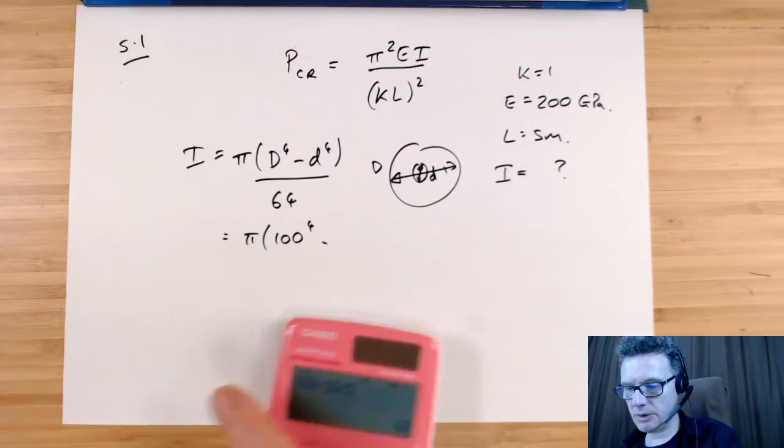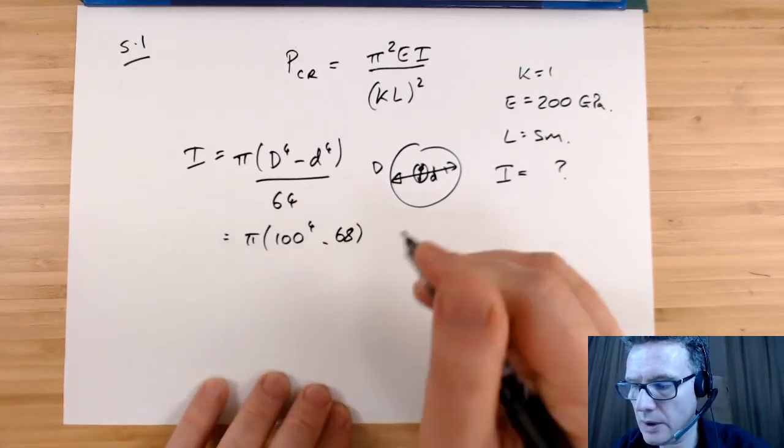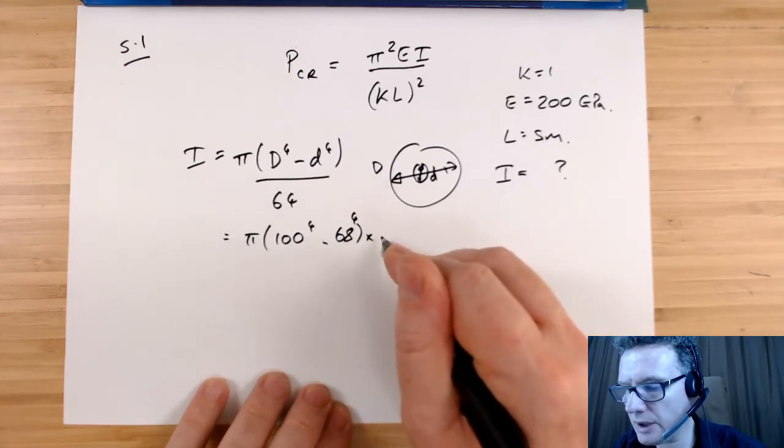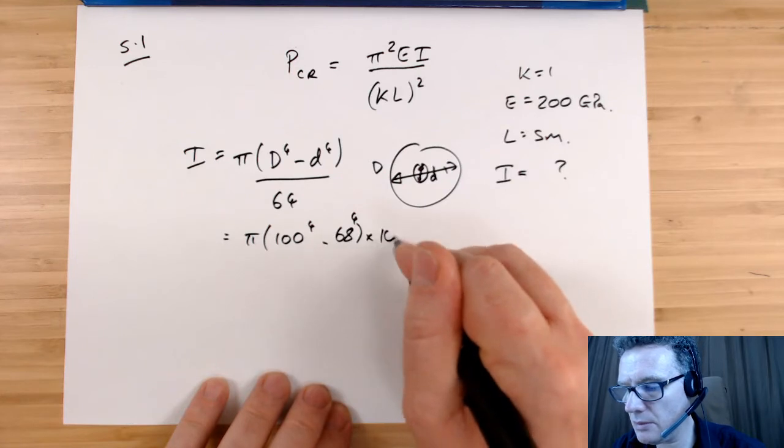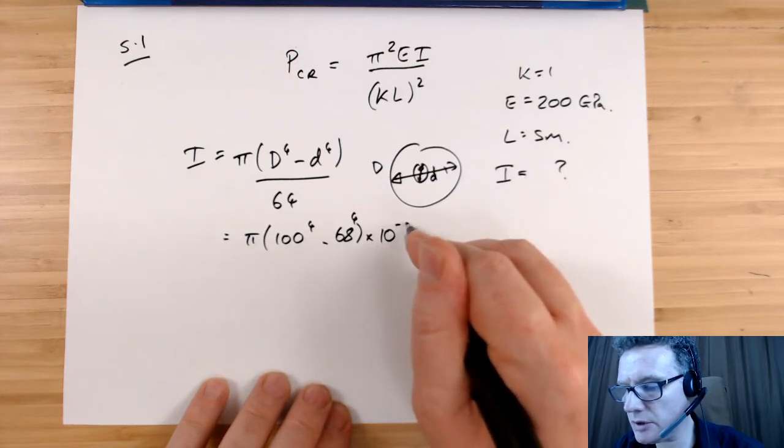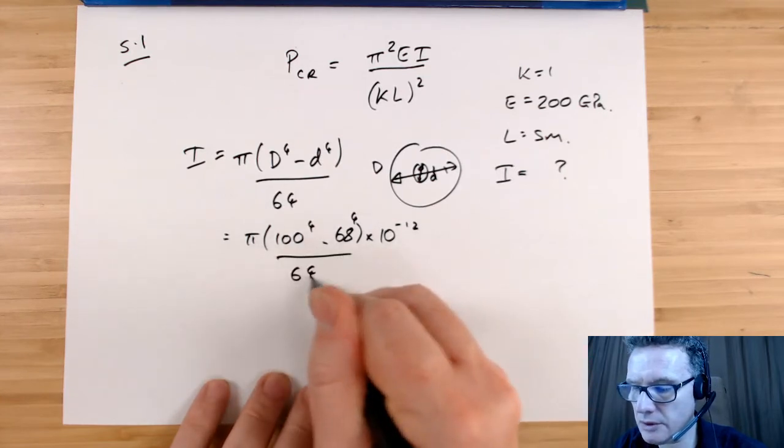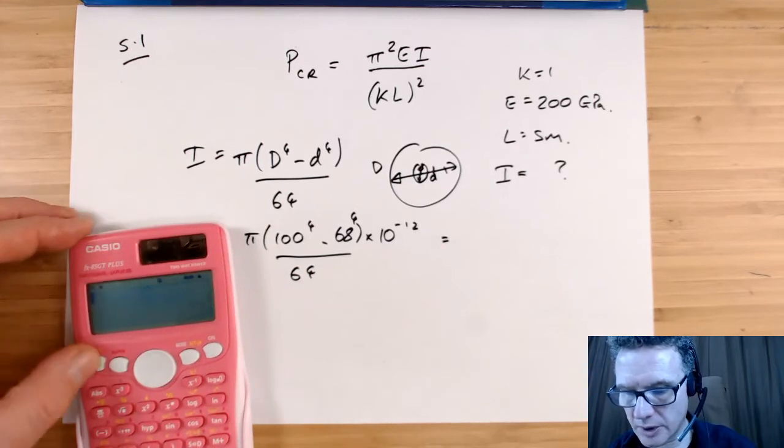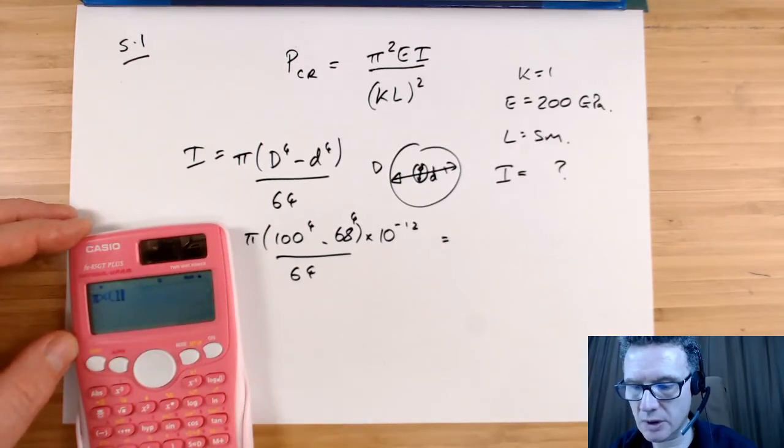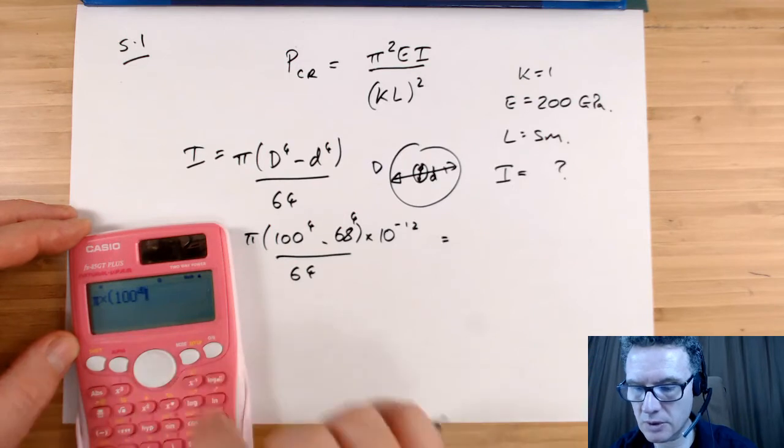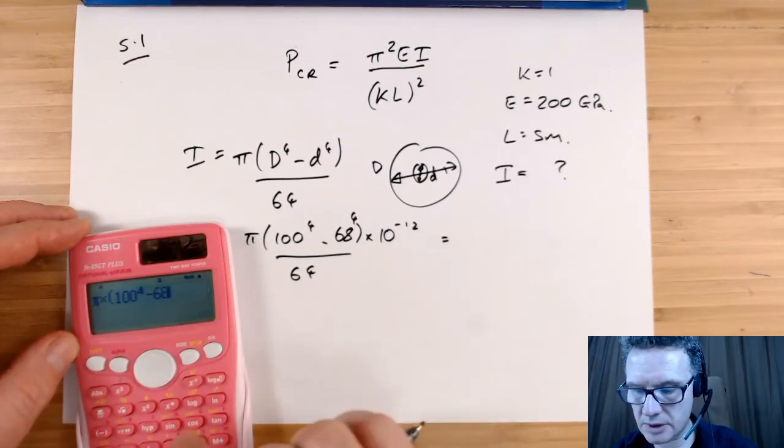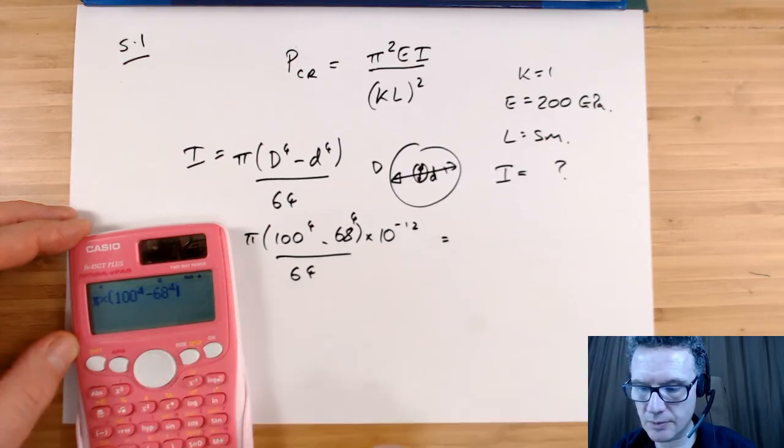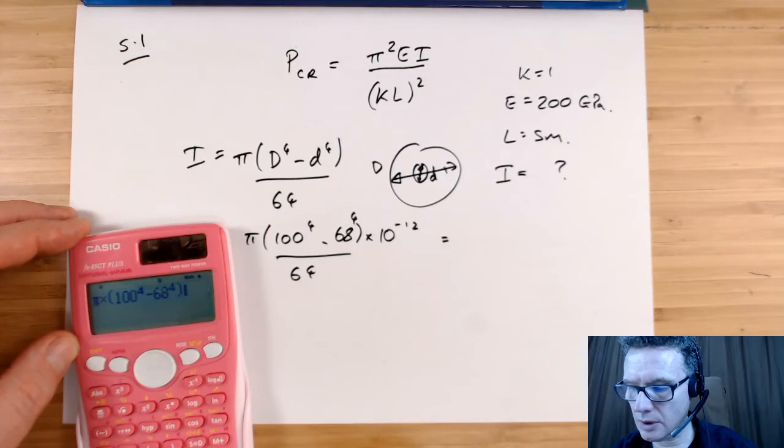68 to the power 4, over 64. That will be in millimeters, so to make that into meters, that will be times 10 to the minus 12 over 64. So π times 100⁴ take away 68⁴ divided by 64.